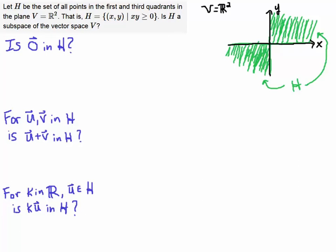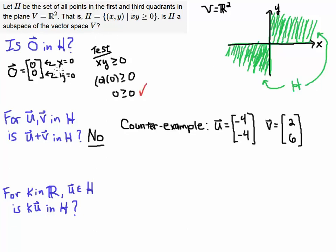So let's go through these three tests. The zero vector is the coordinate essentially (0,0), so that's when x is 0 and y is 0, and you just test it. Here's your condition for testing whether or not your vector is in this set. We take x is 0 and multiply by y is 0, and 0 times 0 is 0, and 0 is certainly greater than or equal to 0. So check, 0 is in the set H.